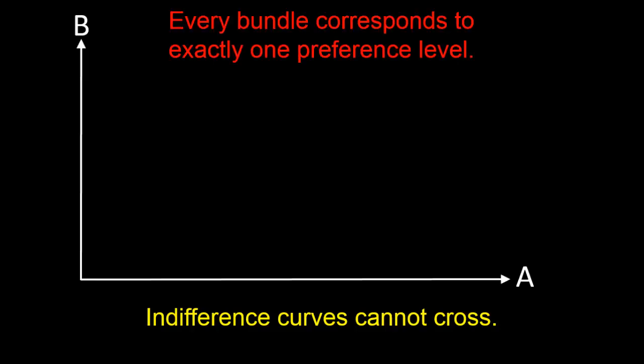Using exactly the same argument we just made, we can now prove that indifference curves can never ever cross either. Let's look at our usual graph. I hope you agree with me that every consumption bundle, every bundle of apples and bananas, can correspond only to exactly one level of preference.